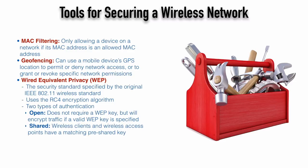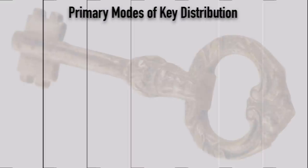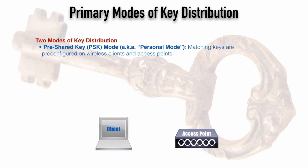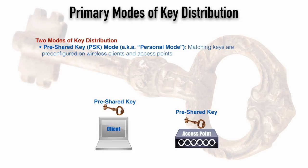The other authentication type is shared, where wireless clients and wireless access points are pre-configured with the key. Sometimes that's called a pre-shared key because the configuration is done manually beforehand. This is the first of two primary modes of key distribution. In pre-shared key or PSK mode — sometimes called personal mode — we pre-configure our wireless devices with the same key, which is used in the encryption algorithm to scramble the data.